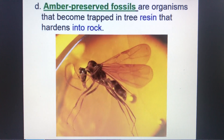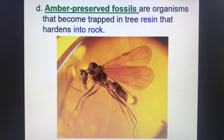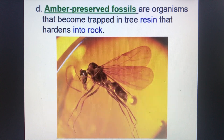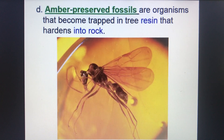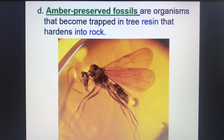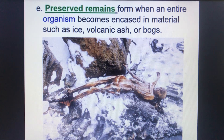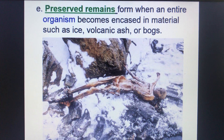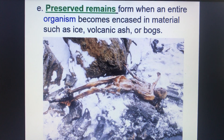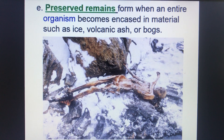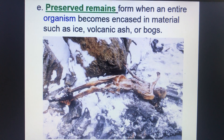And of course, you have the classic amber-preserved fossils, in which organisms get trapped in tree resin and then hardened into a clear rock. Preserved remains can also happen in frozen ice, volcanic ash — like the people in Pompeii — or even in bogs.